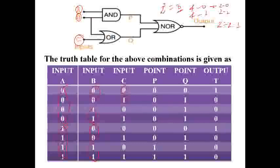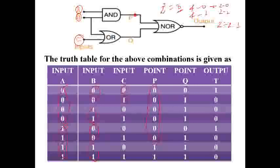Point P is the output of the AND gate, with inputs A and B. In the AND gate, output is 1 only when both inputs are 1. Looking at all eight rows: only in rows 7 and 8 are both A and B equal to 1. Therefore point P outputs 0, 0, 0, 0, 0, 0, 1, 1.